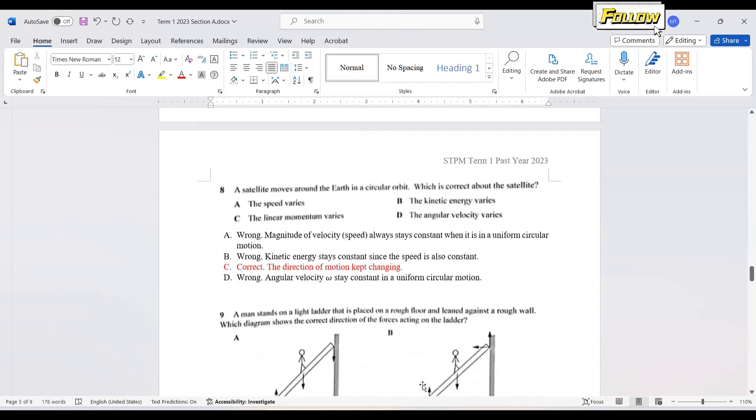I move on to the next question. Satellite moves around the Earth in the circular orbit which is correct about the satellite. The satellite should be in a uniform circular motion where we have the magnitude of the velocity. The speed is constant. Kinetic energy varies which is also wrong. Since our speed is constant, kinetic energy which is also the scalar quantity should be also constant. And next, linear momentum varies, it's correct. Linear momentum is a vector quantity. Since the direction of the motion is keep changing, it is yes that the linear momentum varies. And the last one, angular velocity varies which is certainly wrong.